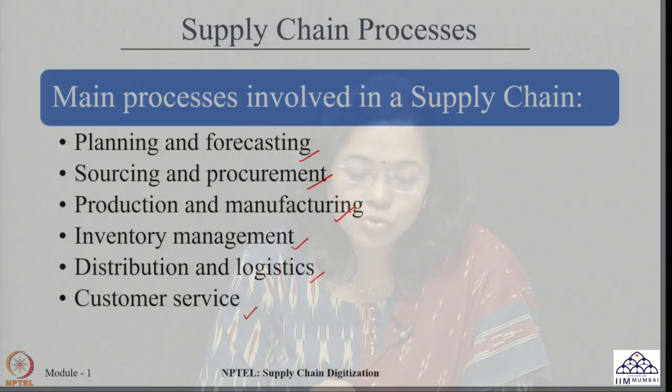This is further followed by distribution of products at different facilities in the supply chain and all related logistics decisions. Finally, once the product reaches the customer, it is important that the customer receives the required services — whether getting the product on time, in the required quantity, or as per their expectations. These are the major processes in any supply chain, followed by different members and stakeholders.